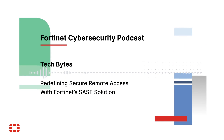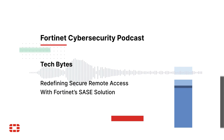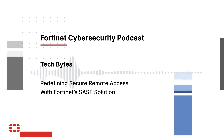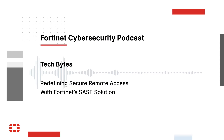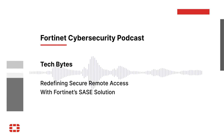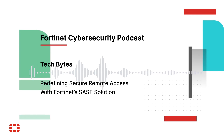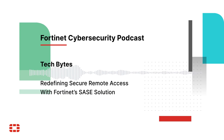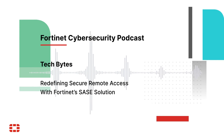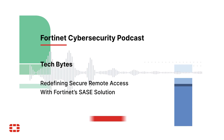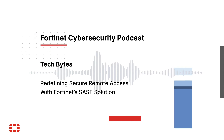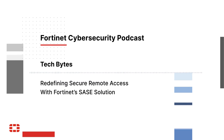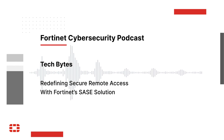The second important use case is private application access. When users are remote and trying to access applications in the data center, in the cloud, or on campus, SASE also enables that private access. We have a very flexible approach — customers can use ZTNA as part of our SASE, or we also enable SD-WAN inside the point of presence to connect for private access. Fortinet has several customers who have deployed secure SD-WAN in branches, data centers, and cloud.